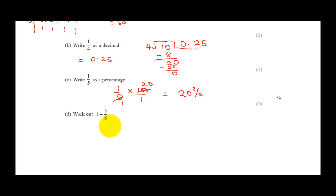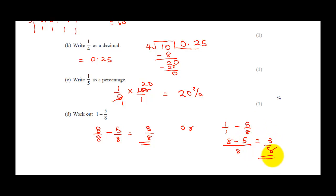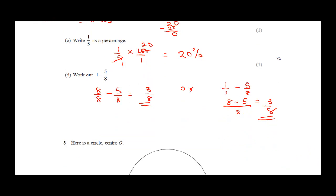Work out 1 minus 5/8. Convert 1 to 8/8, then subtract: 8/8 − 5/8 = 3/8. Alternatively, using LCM of 8: 8 × 1 = 8 minus 1 × 5 = 5, giving 3/8. Either method gives 3/8 as the final answer, earning maximum marks.